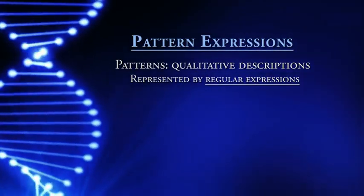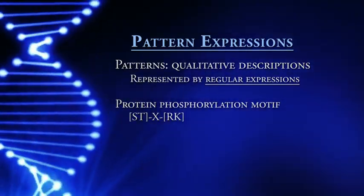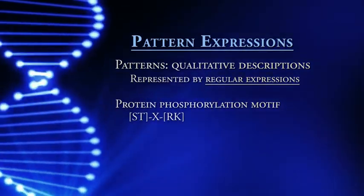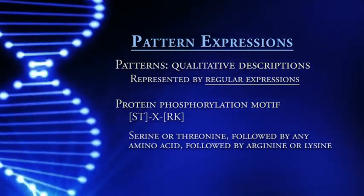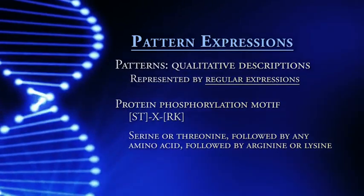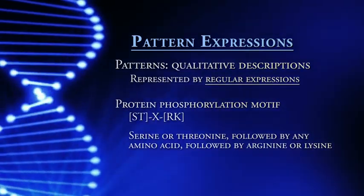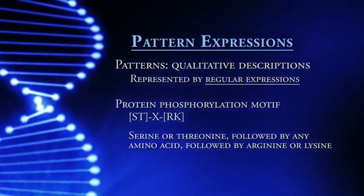A pattern is represented by what's called a regular expression. For instance, this is a protein phosphorylation motif: in brackets, [ST] followed by X followed by [RK]. That means serine or threonine in the first position, X meaning any amino acid, followed by R or K — arginine or lysine. Everything within brackets is an 'or'. So S or T, followed by X, followed by R or K. That's an example of a short pattern. It's relatively short and can occur very often in a protein.